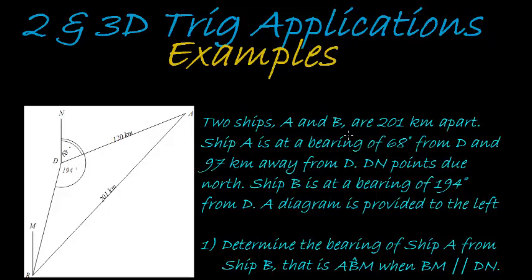So we have two ships, A and B, that are 201 kilometers apart. In our sketch we have ship A and then we have ship B, and we see on the sketch it's indicated 201 kilometers apart. Ship A is at a bearing of 68 degrees from D.